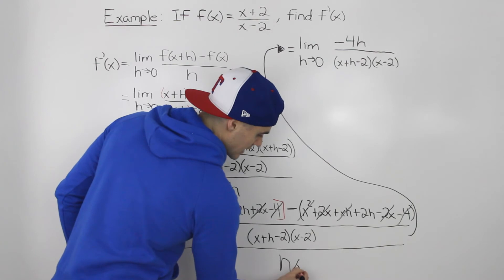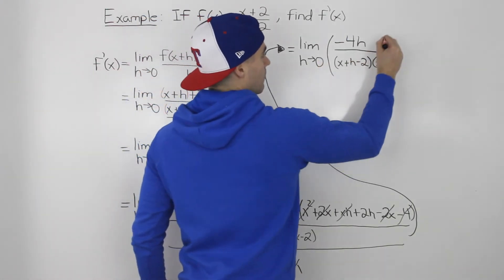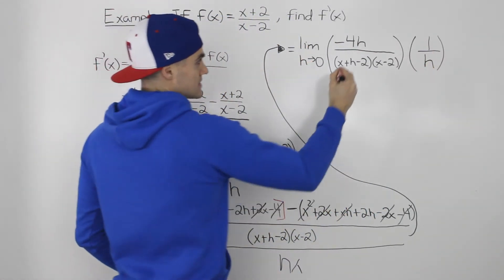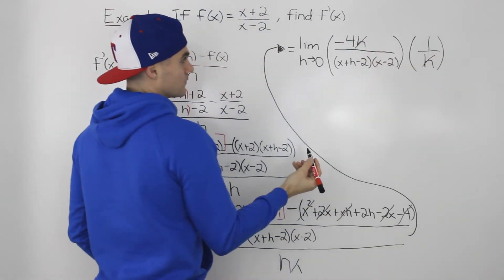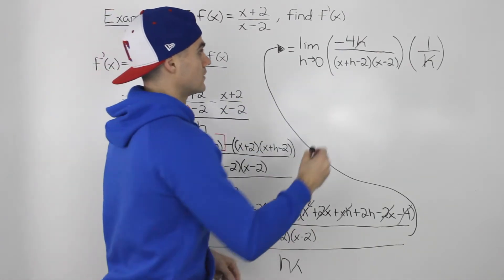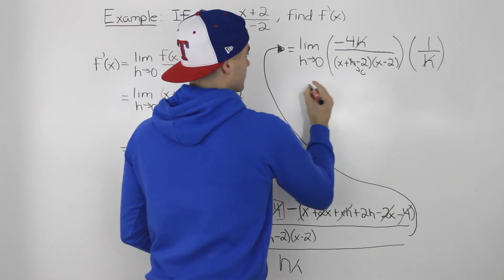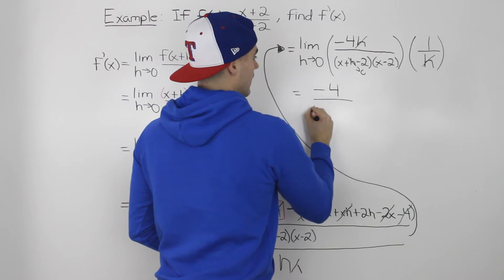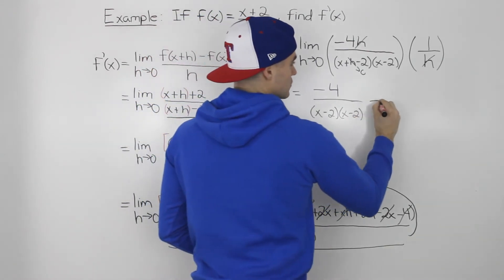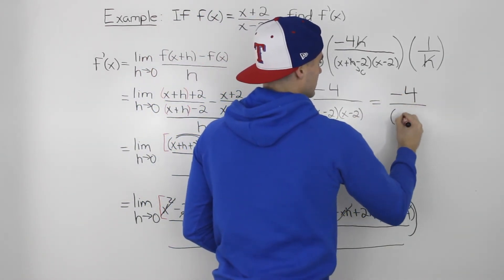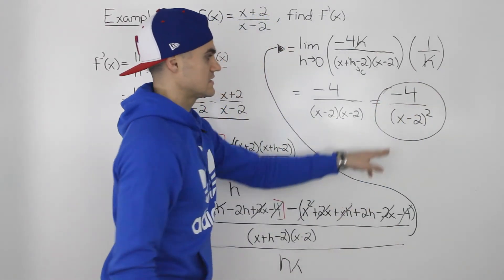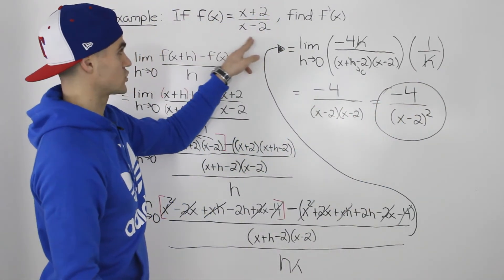Instead of dividing by h, we multiply by 1/h. The h's now cancel out, and we can plug in 0 for h. The only h left is in the denominator, so h goes to 0, leaving us with -4 over (x-2)(x-2), which we rewrite as -4/(x-2)². That is the derivative of f(x) = (x+2)/(x-2).